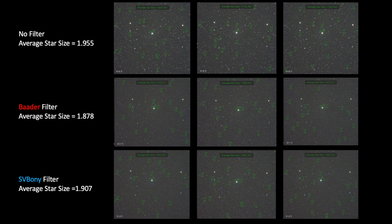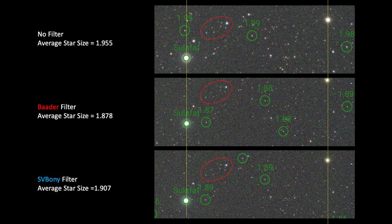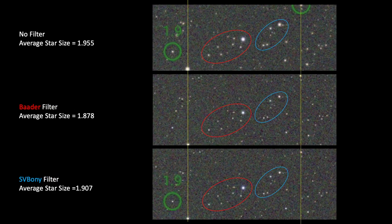A picture is worth a thousand words — or in this case, perhaps a picture is worth a thousand data points. On the next two slides, I selected one image from each set, magnified the image, aligned them to ensure proper proportions, and circled some star patterns where you can clearly see the star reduction effect of the two filters when compared with the no-filter image. In my opinion, the UV-IR cut effect is readily visible for both filters, but visually I cannot see any noticeable difference between the Baader and the Svirboni brand in this imaging setup.